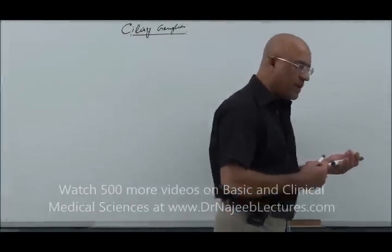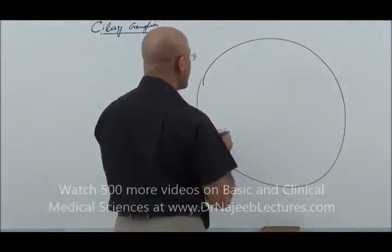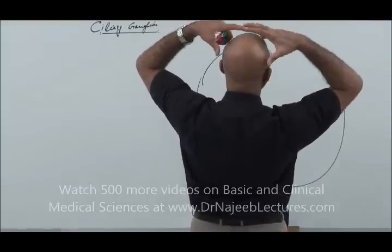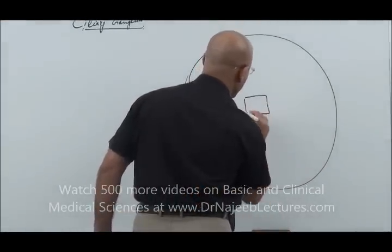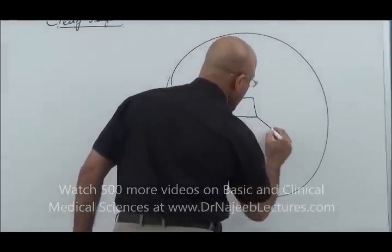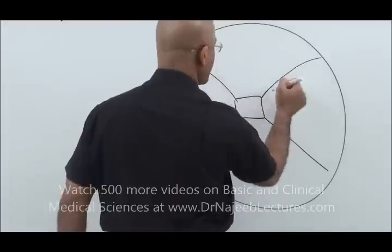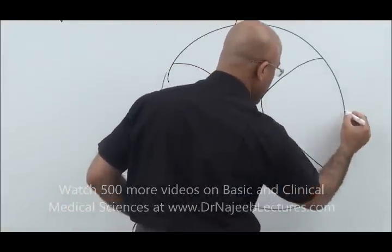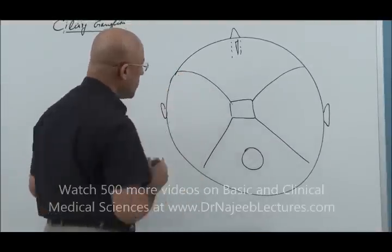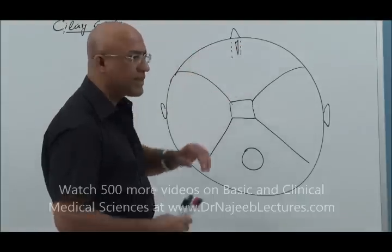Now let's see exactly where the ciliary ganglion is situated in the head. I'm drawing a section of the head — removing the top of the skull and the brain — so you're looking at the cranial cavity. You can see the sella turcica, foramen magnum, the lesser wings of the sphenoid, the anterior cranial fossa with the ethmoidal cribriform plate. The purpose of this diagram is to show the exact location of the ciliary ganglion.